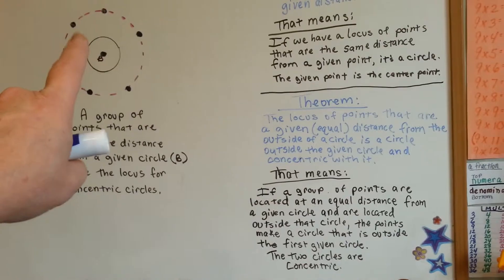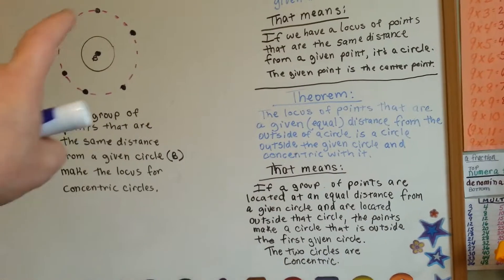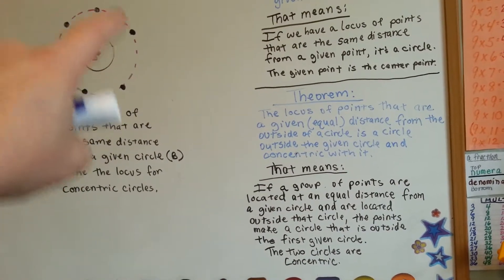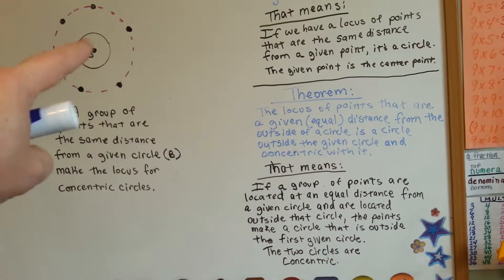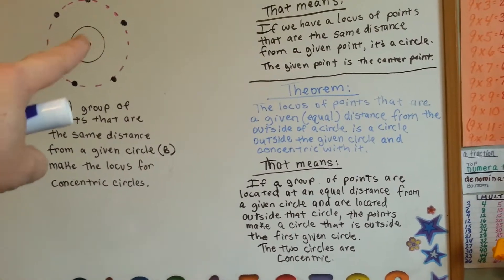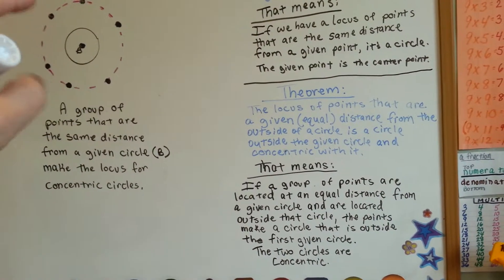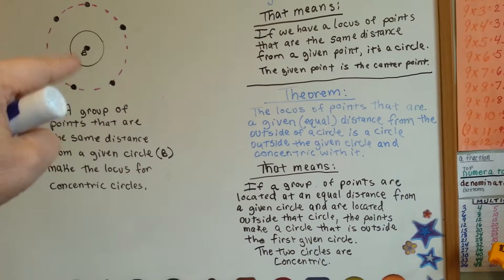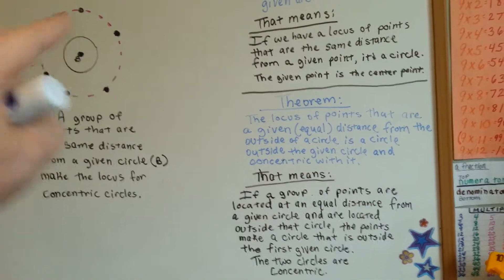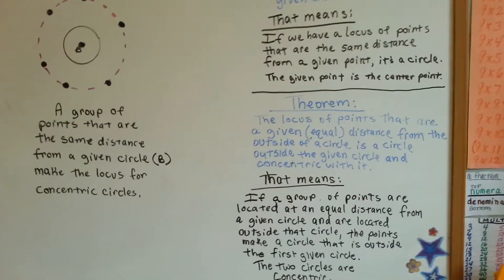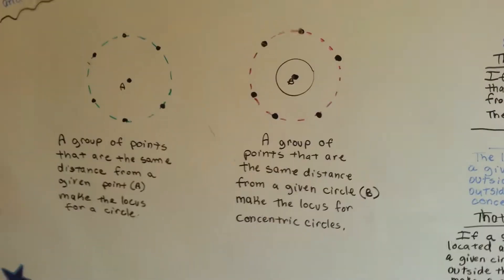let's read that again and look at this drawing. If a group of points are located at an equal distance from a given circle, this guy, and are located outside that circle, the points make a circle that is outside the first given circle. And the two are concentric. Makes a lot more sense when you look at a picture, doesn't it? Okay. So,